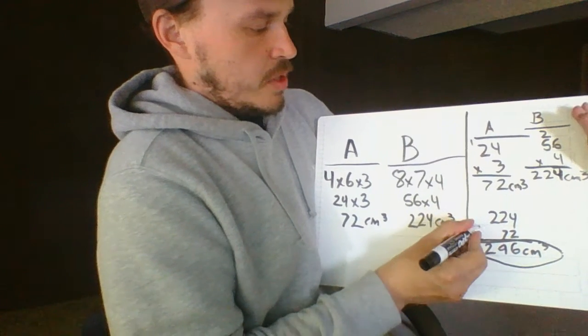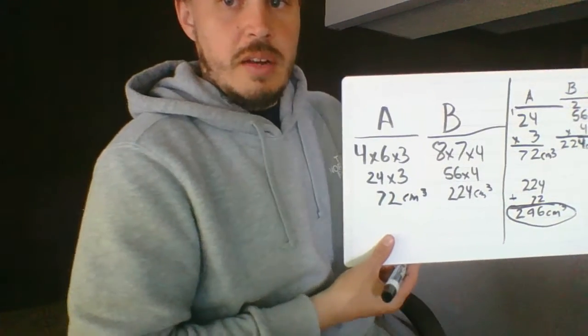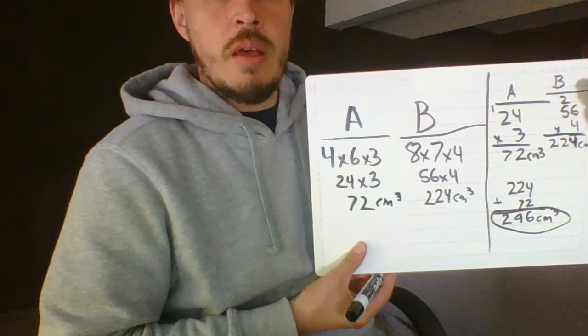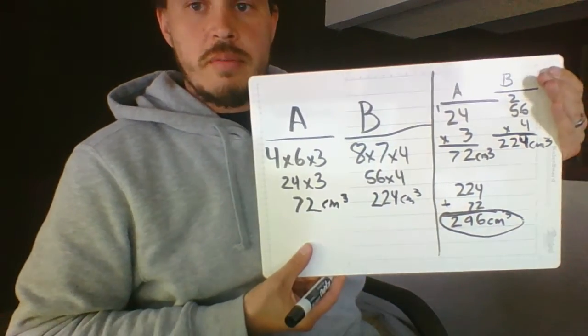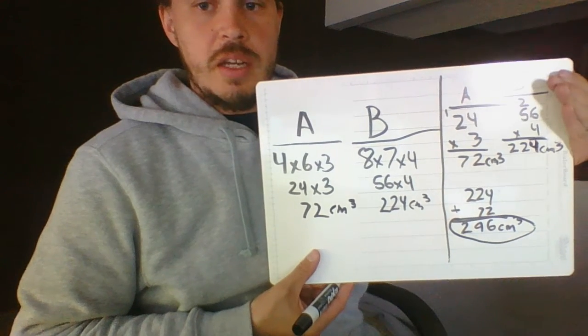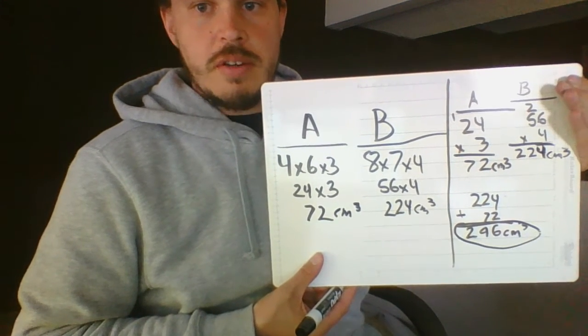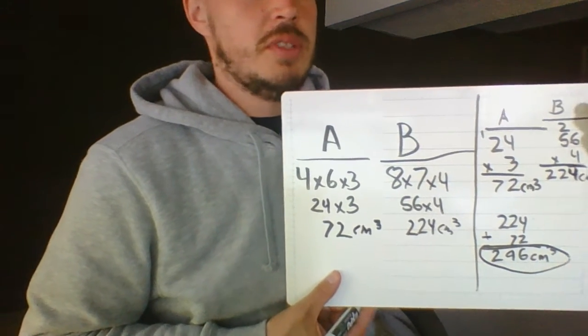Now once you find both of those, you're finding the combined volume. So you add them up. So you'd have 224 plus 72 is going to equal a total of 296 cubic centimeters, which is going to be your answer for number five.